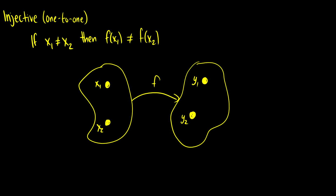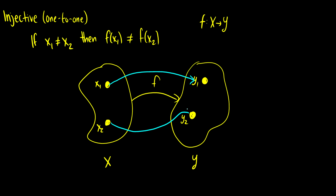One-to-one functions, or injective functions, state that if x1 is not equal to x2, then f(x1) should not be equal to f(x2). We take a function f from x to y, so here we have our domain going to the codomain. What this says is that if x1 is not equal to x2, then we should always get x1 going to a different y value than x2. So this would be acceptable. What wouldn't be acceptable is if x2 also pointed to y1 — if we have that case, then x2 is actually just x1 in disguise. So that's what it means to be injective.